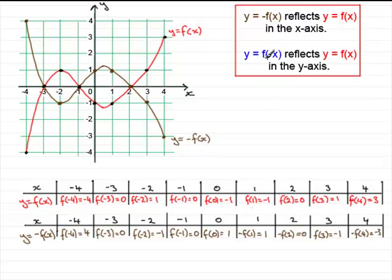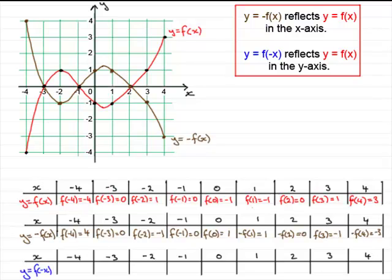To show y equals f of minus x we do exactly the same again. We start with a table of values, x going from minus 4 to 4, and work out the corresponding y coordinates. When x is minus 4, the y value is f of minus minus 4, which becomes f of 4. And f of 4 was 3. Plotting the point minus 4, 3 — you can see how this point got mirrored across the y-axis.